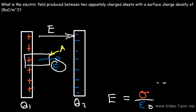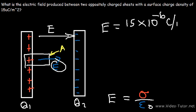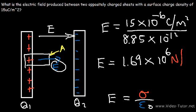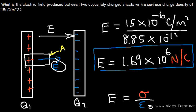So as you can see, it's not very difficult to derive the formula for this electric field using Gauss's law — it's pretty straightforward. The surface charge density is 15 microcoulombs, or 15 times 10 to the minus 6 coulombs per square meter, divided by epsilon-naught, which is 8.85 times 10 to the minus 12. The answer is about 1.69 times 10 to the 6 newtons per coulomb. That is the electric field in between this parallel plate capacitor.